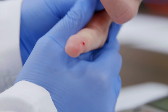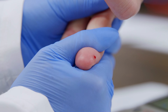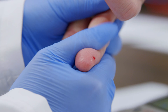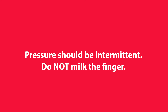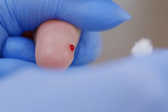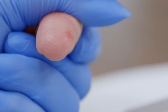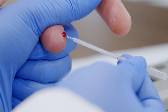To get a drop of blood, gently apply pressure to the finger, starting at the end closest to the hand and moving towards the tip. Pressure should be intermittent — do not milk the finger. Wipe away the first drop of blood with gauze and use the second blood drop for testing. The blood drop should be hanging down from the finger to make it easier to collect the sample with a pipette or capillary tube.